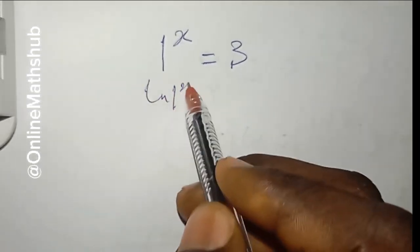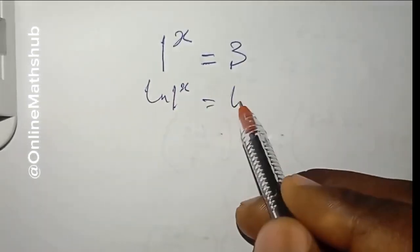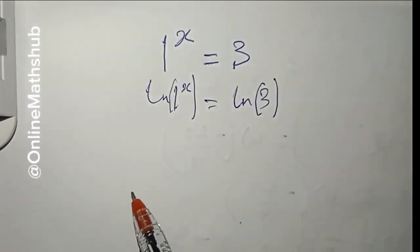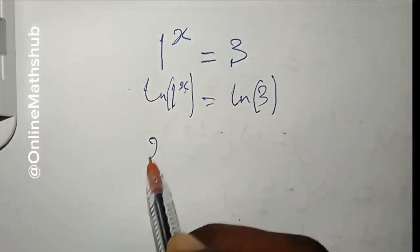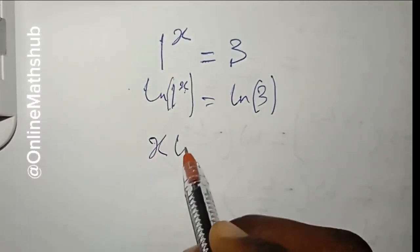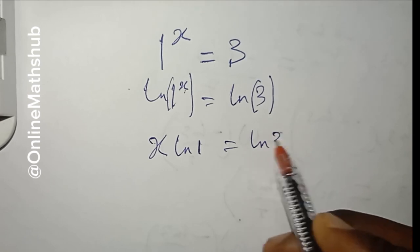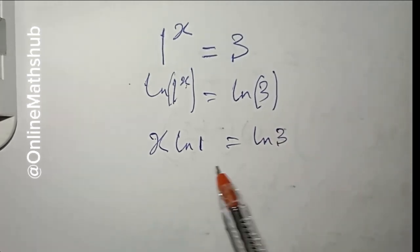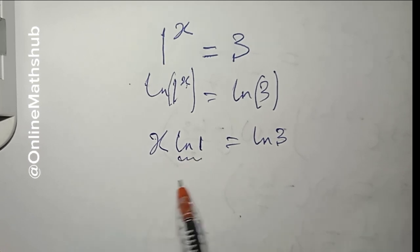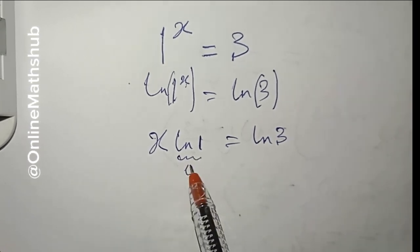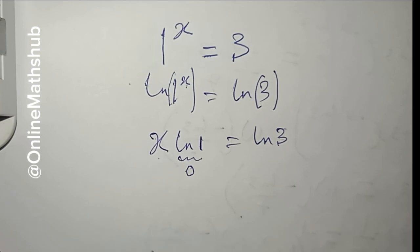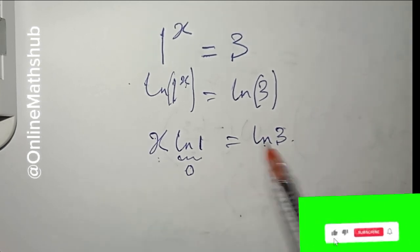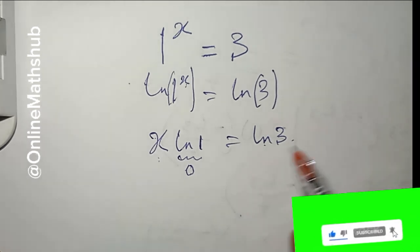So taking the natural log of both sides: ln(1^x) = ln(3). I bring down the x, giving me x times ln(1) = ln(3). But you will quickly see there is a problem, because the natural log of 1 is zero — and zero multiplied by x gives you zero.